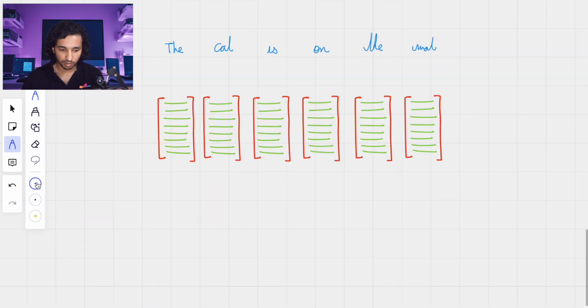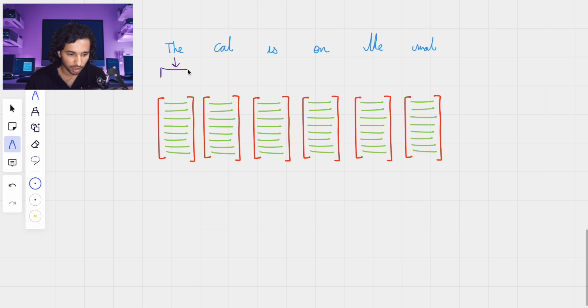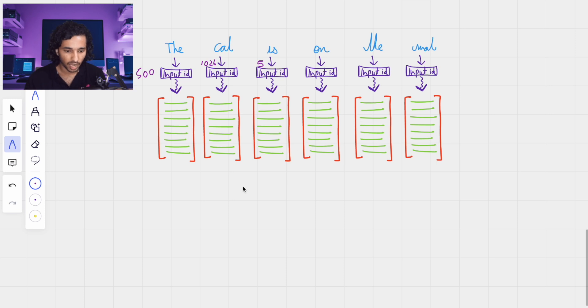As it is established that we have different embeddings for each of these words initially, this is done by first mapping each of these words. Let's say if you have the three-letter word the, it will have an input id. It might have let's say 500 as input id. Cat has 1026. Ease has let's say 5. And this in turn will be mapped to a certain initial word embedding. This might be initialized at a specific value. And then this would also be trained later through the transformer model.